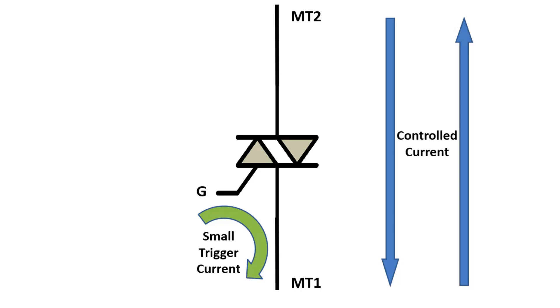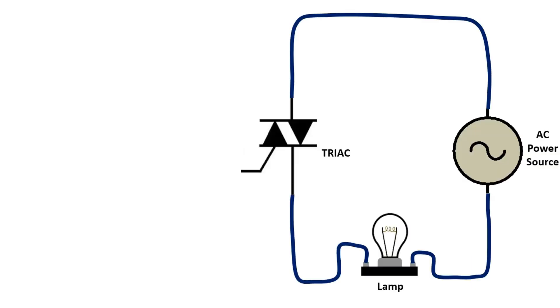To better understand the working principle, we can give an example. As here, let's connect a lamp between the MT1 and MT2 pins of the TRIAC and control the lighting of this lamp with an AC source.